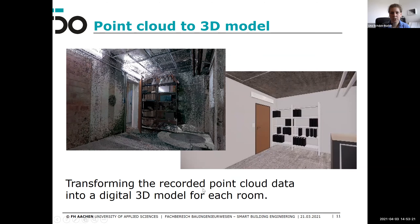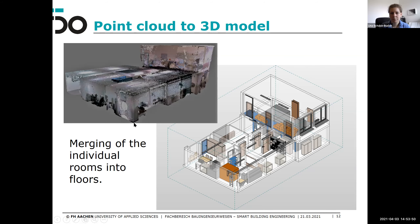Here you can see some pictures from the process. On the left side you can see a point cloud — a combination of lots of photos taken by the laser scanner and combined into a 3D point cloud. On the right side you see the digital 3D model in Revit derived from that room. In the next step you have point clouds for all rooms, which can then be merged floor by floor. On the left you see the point cloud data built up into floors, and on the right you see the 3D planning model created from that data.